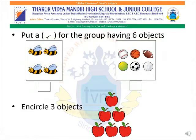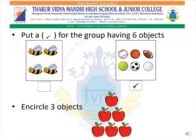Let us move on to the next question: Put a tick for the group having 6 objects. Here we have to count the objects in each box. The second box is having 6 objects, so we tick the second box. Next question: Encircle 3 objects. We count 3 objects and put a circle around them.